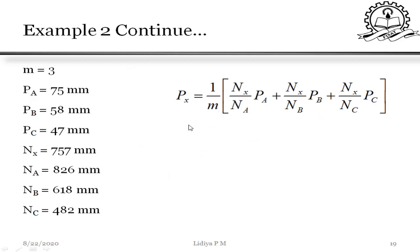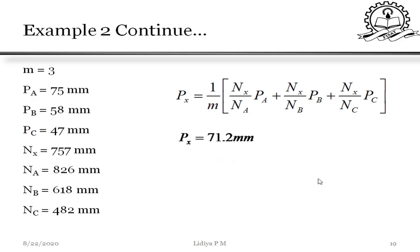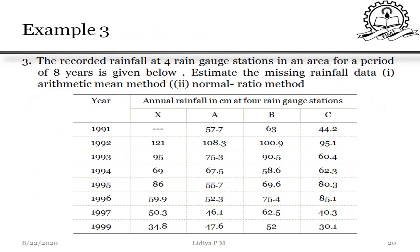Using the normal ratio method: PX = (1/m) × [(NX/NA) × PA + (NX/NB) × PB + (NX/NC) × PC], where 1/m = 1/3 and NX = 757. Substituting NA = 826, NB = 618, NC = 482 with their respective precipitation values, we get the missing data PX = 71.2 mm.